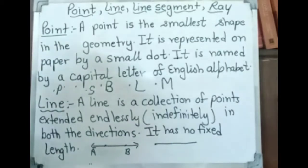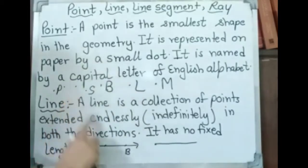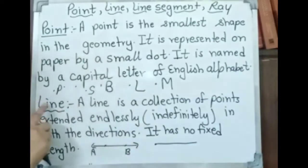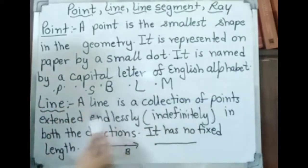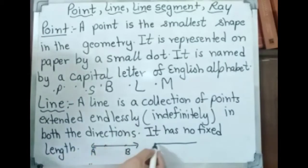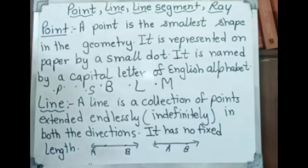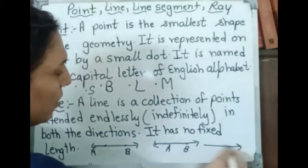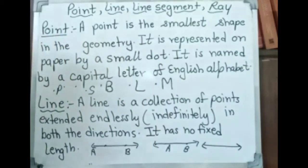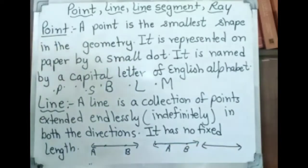After that we have horizontal line, straight line, vertical, then line segment, curved lines. A line is a collection of points extended endlessly — arrowhead on both sides. This is line AB. It extends endlessly and has no fixed length. Always keep in mind the example of a railway track: that is a line — no end point, extended endlessly in both directions.